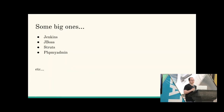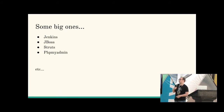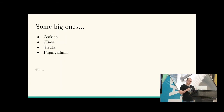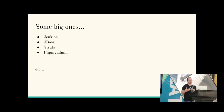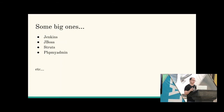Some big ones: Jenkins, JBoss, Struts, phpMyAdmin. The list is really long — all HTTP exploits that are also vulnerable to cross-site request forgery. Jenkins has a feature to protect against CSRF, but you can turn that option off. If you're dealing with a large company and the attacker is sweeping your entire subnet, there's a good chance at least one person will have the protection turned off.